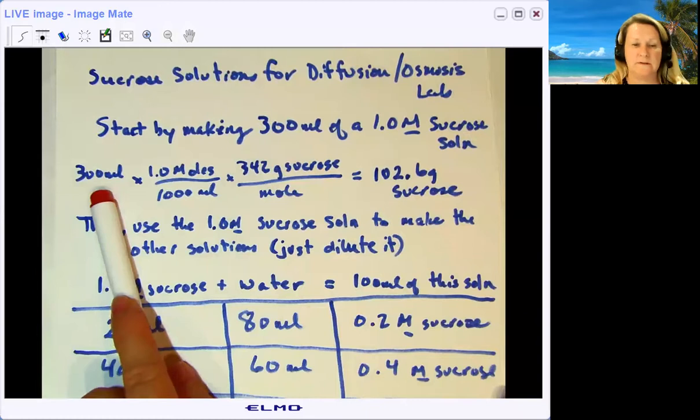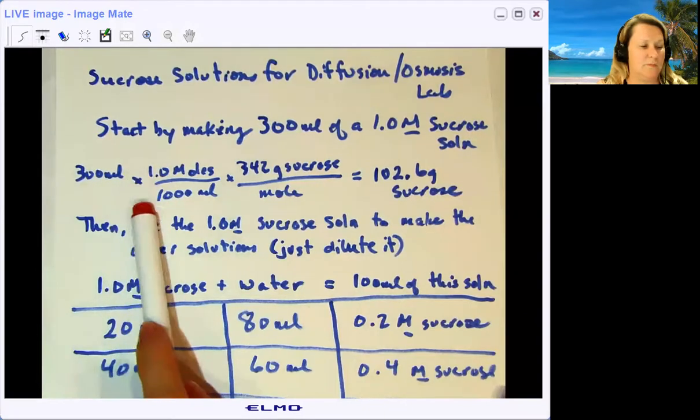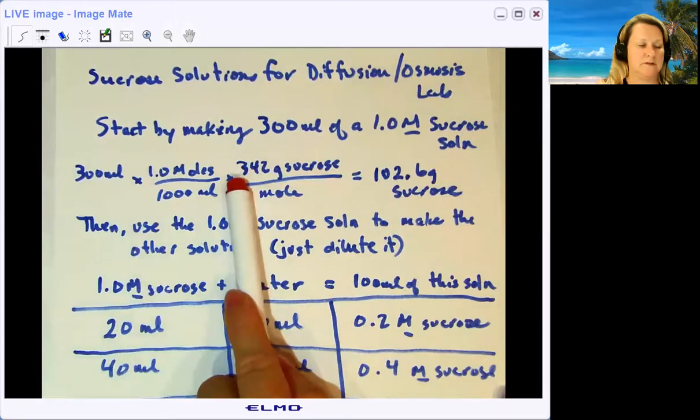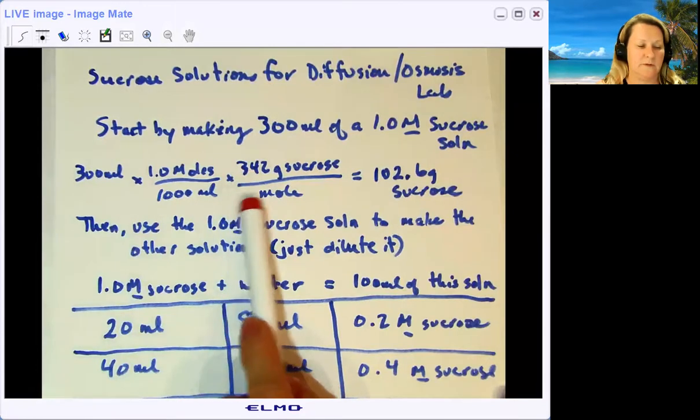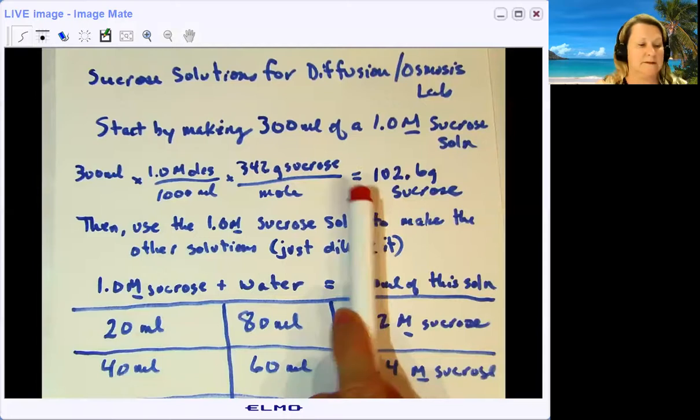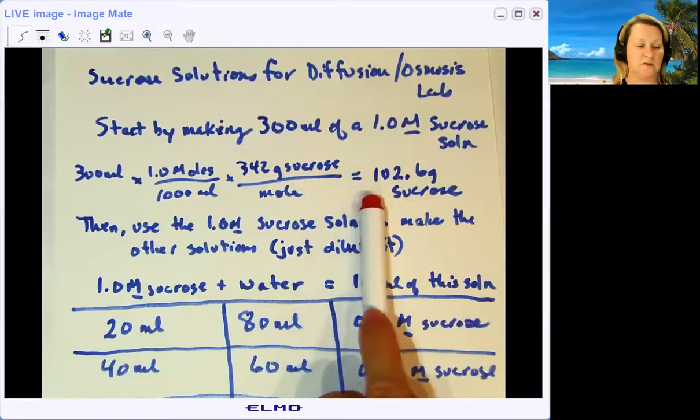If it's one mole per 1,000 mils and the molar mass of sucrose is 342 grams per mole, that means we need 102.6 grams of sucrose. Okay, so 102.6 grams of sucrose.